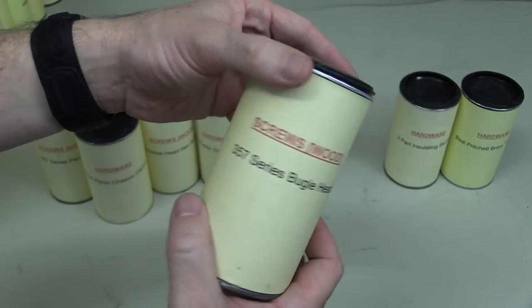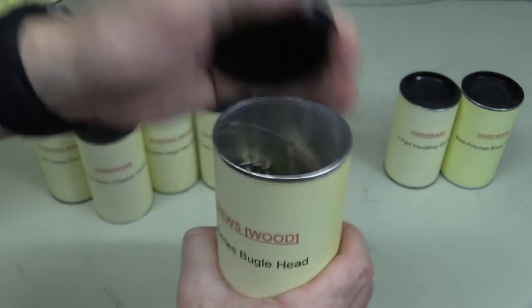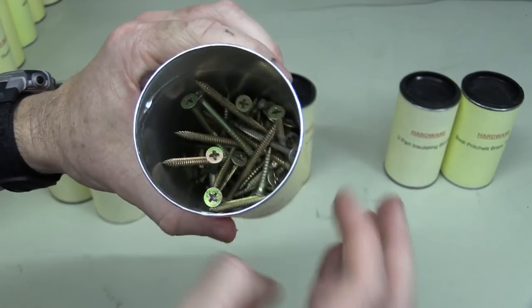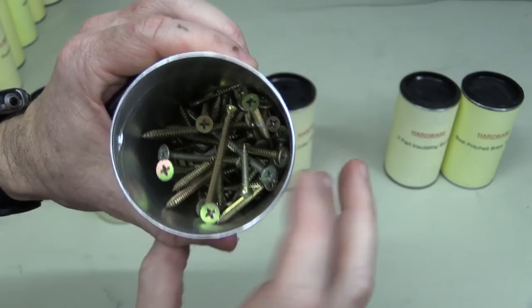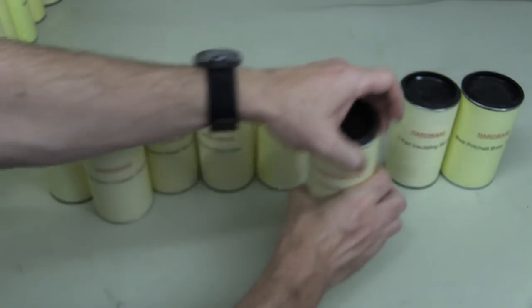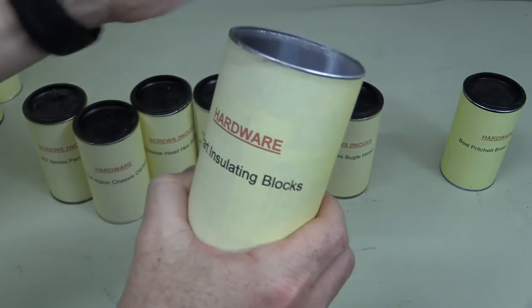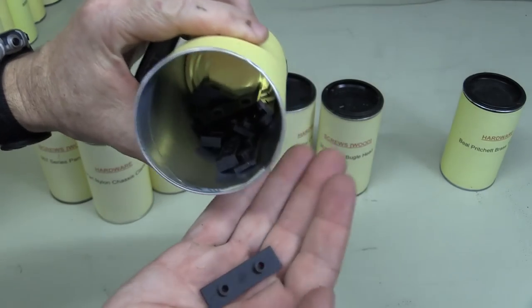3-5-7 series bugle head. Oh look at that. Yeah, see I know, did they look new? Oh no, there's a few smaller ones in there, things like that. Two-part insulating blocks. There you go.